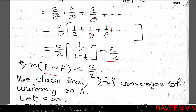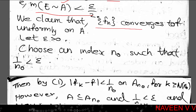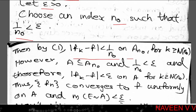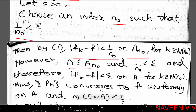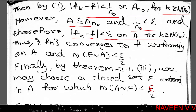This gives us that measure of E minus A is less than epsilon by 2. Now we show that the sequence fn converges to f uniformly on A. Given an arbitrary positive epsilon, choose an index n0 such that 1 by n0 is less than epsilon. Then applying the lemma with n0, we have modulus of fk minus f less than 1 by n0 on An0, for all k greater than or equal to capital N(n0). Since A is a subset of An0, we have modulus of fk minus f less than 1 by n0 less than epsilon on A, for all k greater than or equal to capital N(n0).